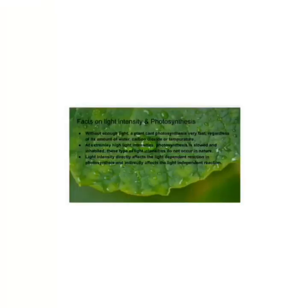Without enough light, a plant can't photosynthesize very fast regardless of its amount of water, carbon dioxide, or its temperature. At extremely high light intensities, photosynthesis is slowed and inhibited, though these types of light intensities do not occur in nature. Light intensity directly affects the light-dependent reaction in photosynthesis and indirectly affects the light-independent reaction.